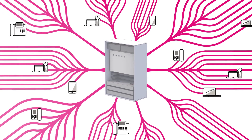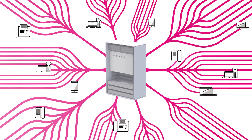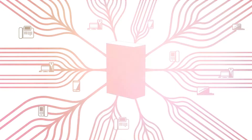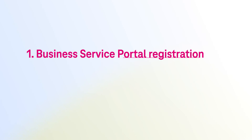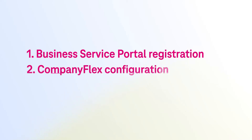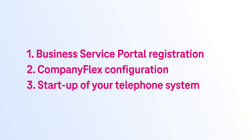The setup is performed in three steps. 1. Registration of your user account to manage your fixed-line contracts on the business service portal. 2. Configuration of CompanyFlex SIP trunk in the administration portal. 3. Startup of your telephone system.